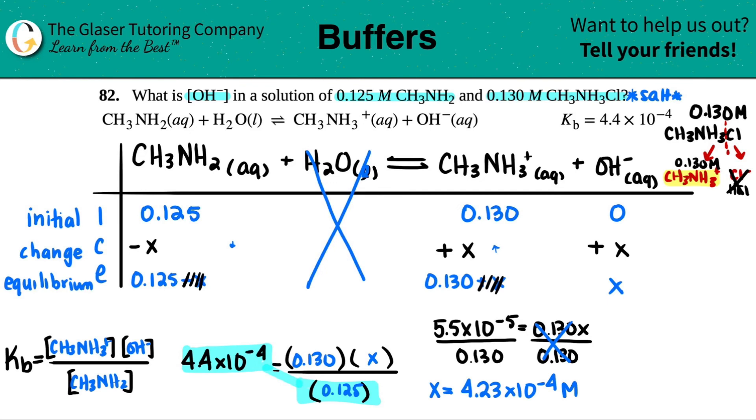And remember, x was the OH minus concentration, which is what we were trying to solve for. So this is the value. So I can just say that OH minus equaled 4.23 times 10 to the negative fourth molarity.